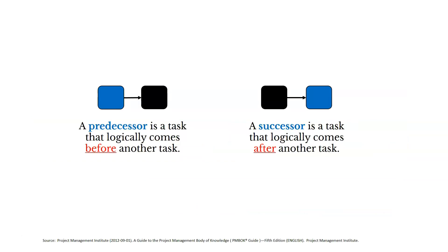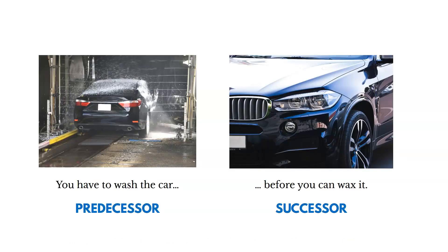A predecessor is a task that comes logically before another one. A successor is a task that logically comes after another. The way I remember this: P comes before S in the English alphabet, so a predecessor comes before a successor. For example, when washing a car, that could be a predecessor, and waxing it would be the successor. We don't want to wax the car before we wash it — this is the order we need to go in.